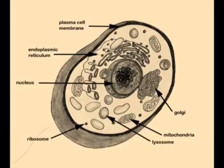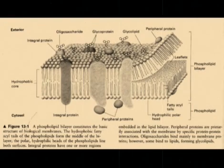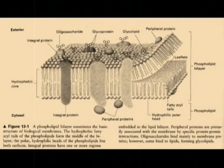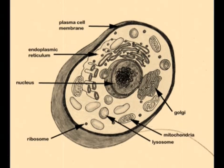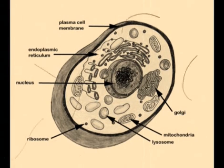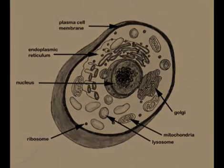The cell membrane is a semi-permeable lipid bilayer found in all cells. Things can go into the cell, and the cell can also make things go out, which will be shown in just a few moments.